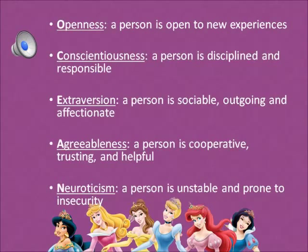The Big Five uses the acronym OCEAN. O is for openness — a person who is open to new experiences. C is for conscientiousness — a person who is disciplined and responsible. E is for extroversion — a person who is sociable, outgoing, and affectionate. A is for agreeableness — a person who is cooperative, trusting, and helpful. N is for neuroticism — a person who is unstable and prone to insecurity.